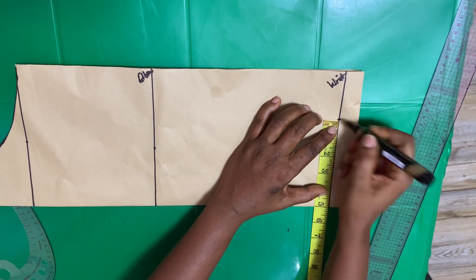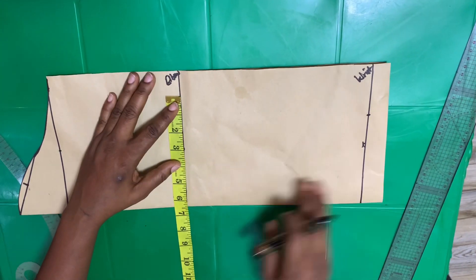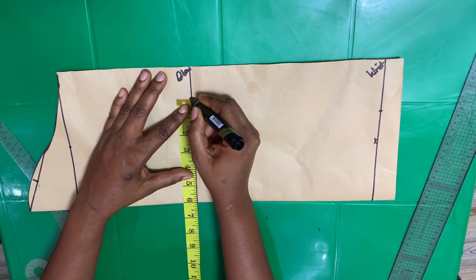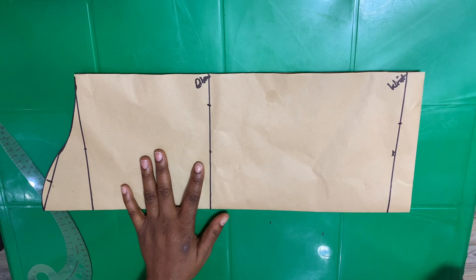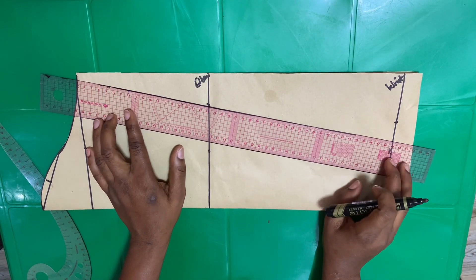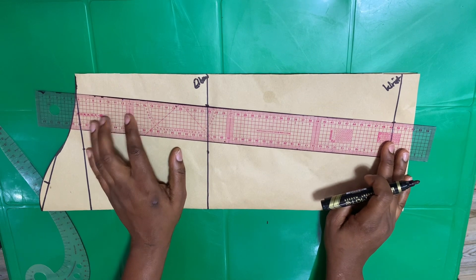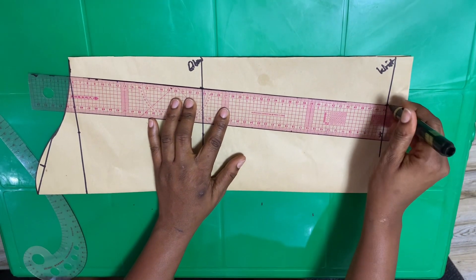Then go over to the elbow. The elbow measurement I will use is 12 inches, so divided by two is 6 inches. I will use a straight ruler to join all these points together.